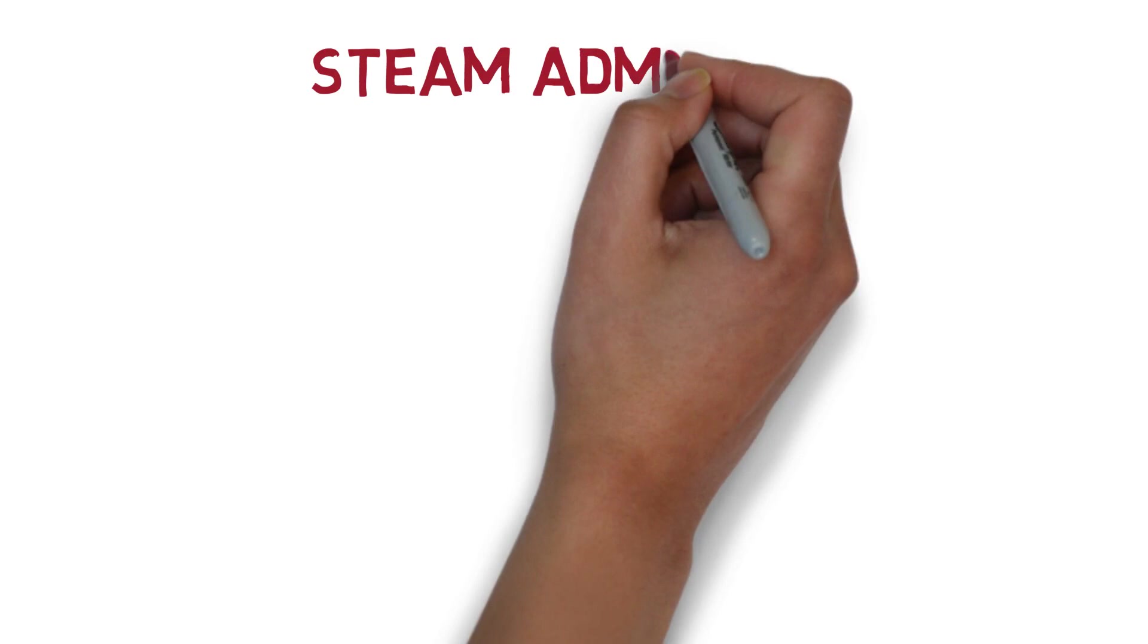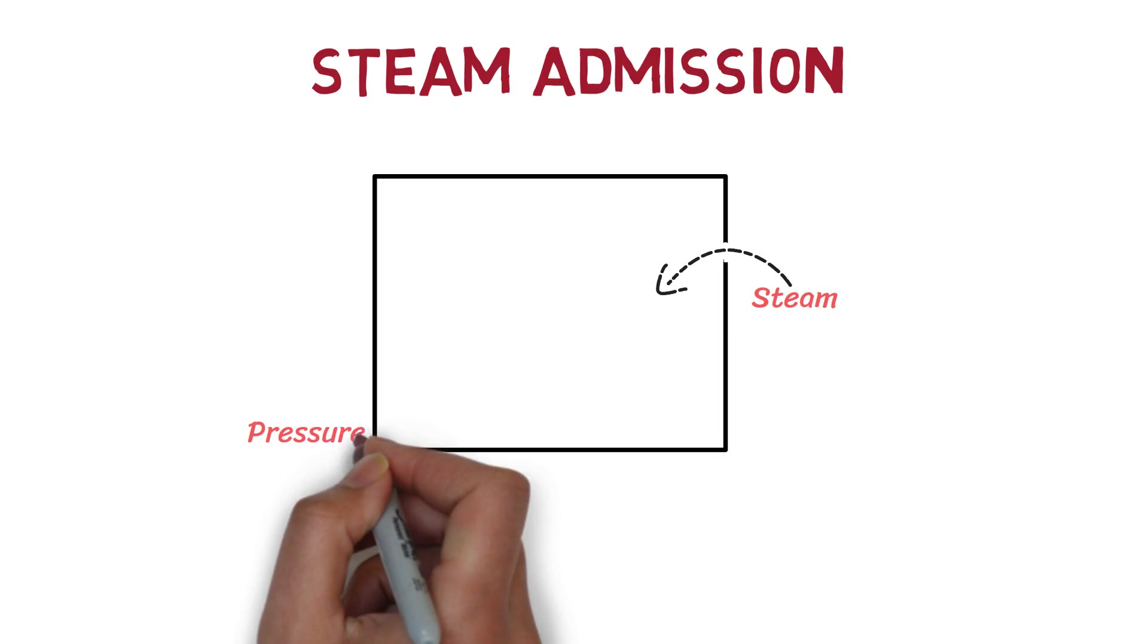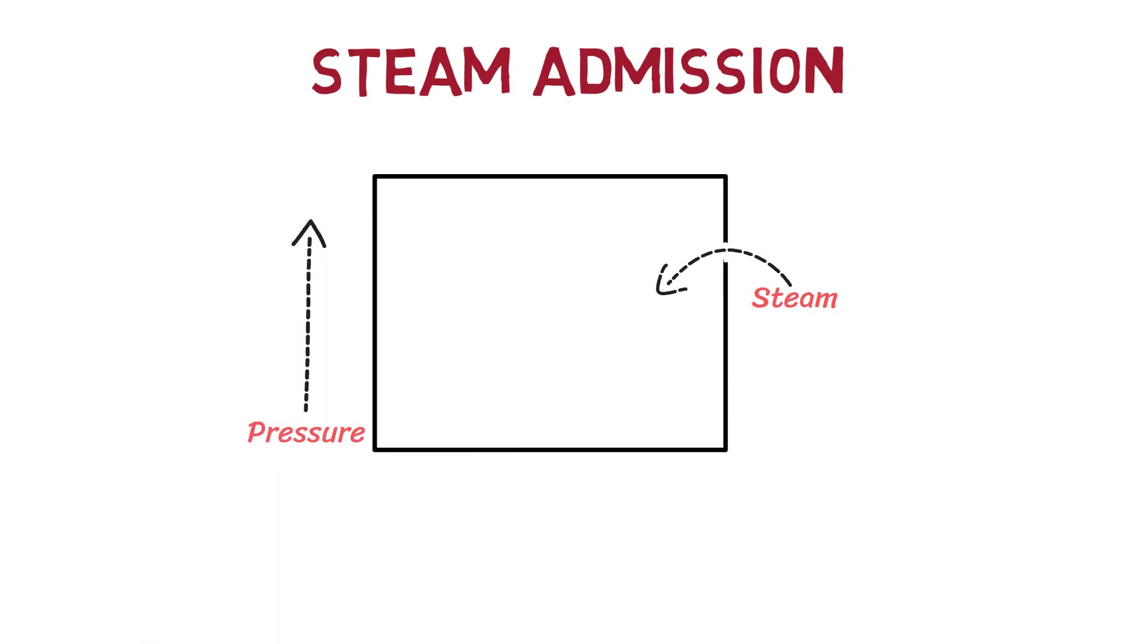After air removal, steam is introduced into the chamber. In this stage, the pressure in the chamber increases, allowing the steam to reach temperatures above 100 degrees Celsius.